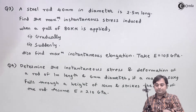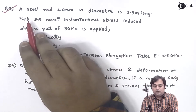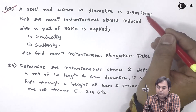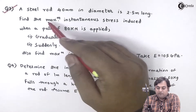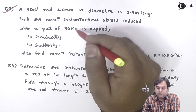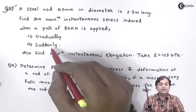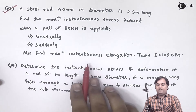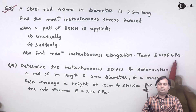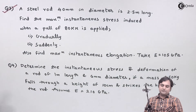Let us take the next problem. A steel rod 40mm in diameter is 2.5 meters long. Find the maximum instantaneous stress induced when a pull of 80 kilo Newton is applied gradually and suddenly. Also find maximum instantaneous elongation. Take E equal to 105 GPa.